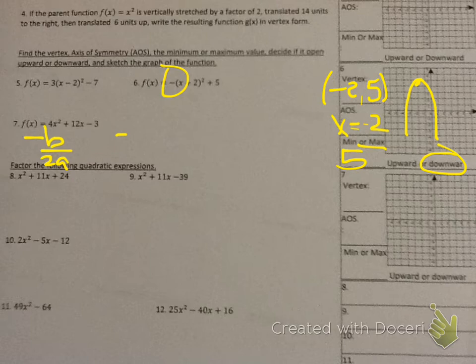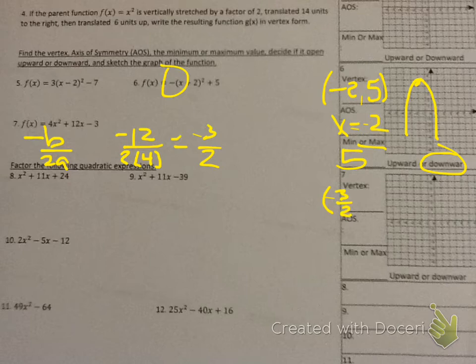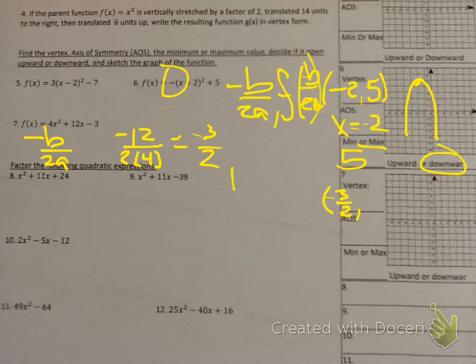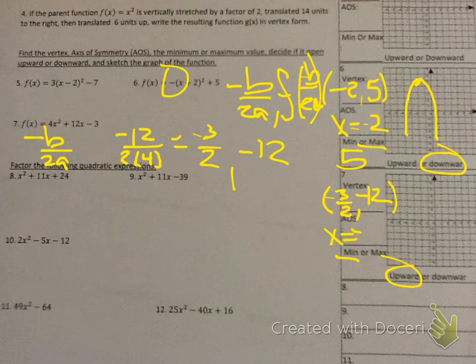Number 7 is standard form — that's where you have to do negative b over 2a. So you're saying negative 12 over 2 times 4, which gives you negative 3 halves. That's the x-coordinate of your vertex. Put that back into the function to find the y-value. You should get negative 12, which tells you — since it opens upward — that's a minimum. Your axis of symmetry is negative 3 halves and your minimum is negative 12.